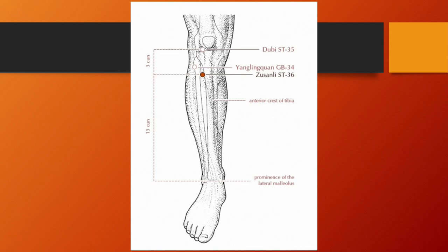Stomach 36, Zusanli or leg 3 miles, is located on the anterior aspect of the lower leg, 3 tsun below Stomach 35, 1 finger-breadth from the anterior crest of the tibia. Stomach 36 is the he-sea point of the stomach channel, command point of the abdomen, and point of the sea of water and grain. Functions: tonifies qi and blood, harmonizes and strengthens the spleen and stomach, strengthens the body and wei qi, raises yang, calms the shen, activates the meridian, stops pain. Stomach 36 is known as one of the most important points to tonify qi and blood and promote general wellness. Needling: perpendicular insertion, 1 to 2 tsun.